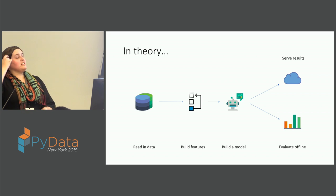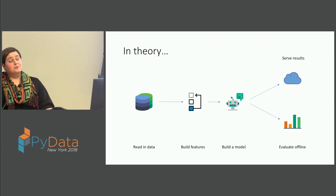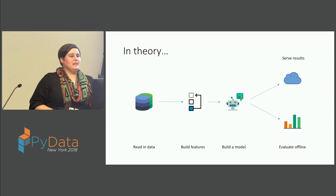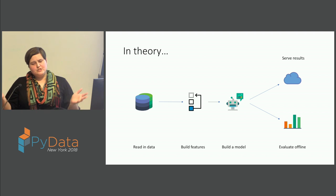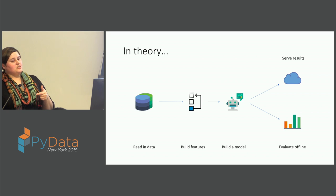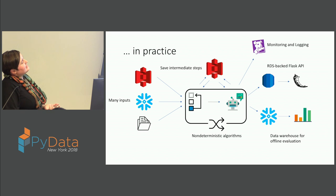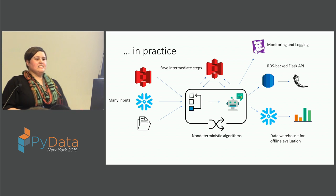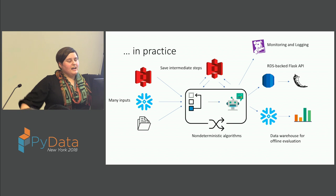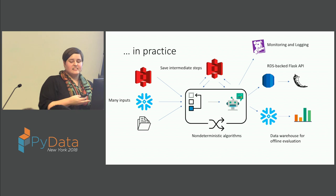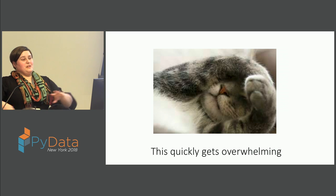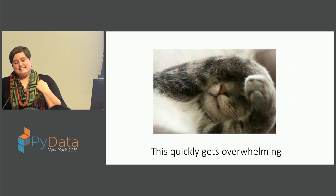In theory, we have workflows that look something like this: we read in a bunch of data, build features, build models, hand results off to someone, evaluate results. Looks pretty straightforward. But in practice, particularly as you move towards production systems, you get things that look more like this. This is what a lot of our workflows look like at ShopRunner — you have a bunch of pieces interplaying, you're reading data in, writing it out, calling APIs, and you've got non-deterministic things in there. This quickly gets overwhelming, and it makes you just not want to write tests at all. But that is a bad idea and you will regret it later.